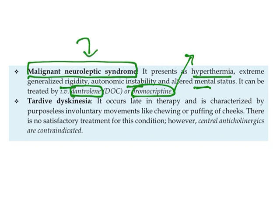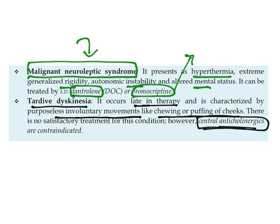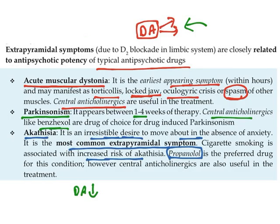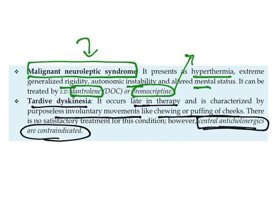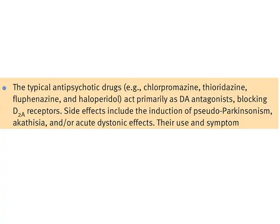The last extrapyramidal effect is tardive dyskinesia, which occurs late in therapy and is characterized by involuntary movements like chewing or puffing of the cheeks. Central anticholinergic drugs are contraindicated for this condition. In summary, the majority of adverse effects from typical antipsychotics are related to muscle problems: pseudo-parkinsonism, akathisia (restlessness), and tardive dyskinesia (disrupted kinetic movements).